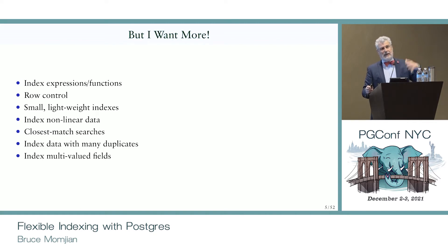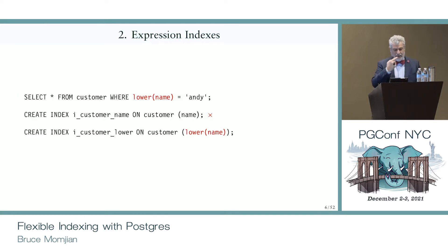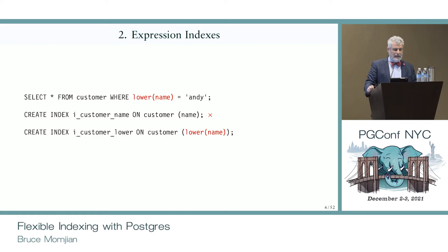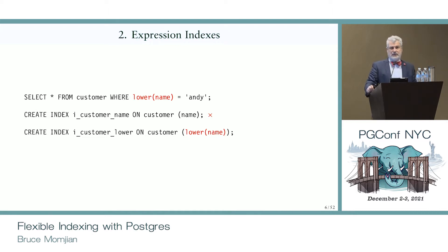Frankly, this extendable capability of Postgres — its ability not only to handle non-relational data but to handle it efficiently — is one of the reasons Postgres is so popular today. If it were just like traditional databases, it wouldn't be as exciting as it is. So let's talk about a simple case using Btree: indexing an expression. Do you have any questions? Okay. Why would you want to index an expression?